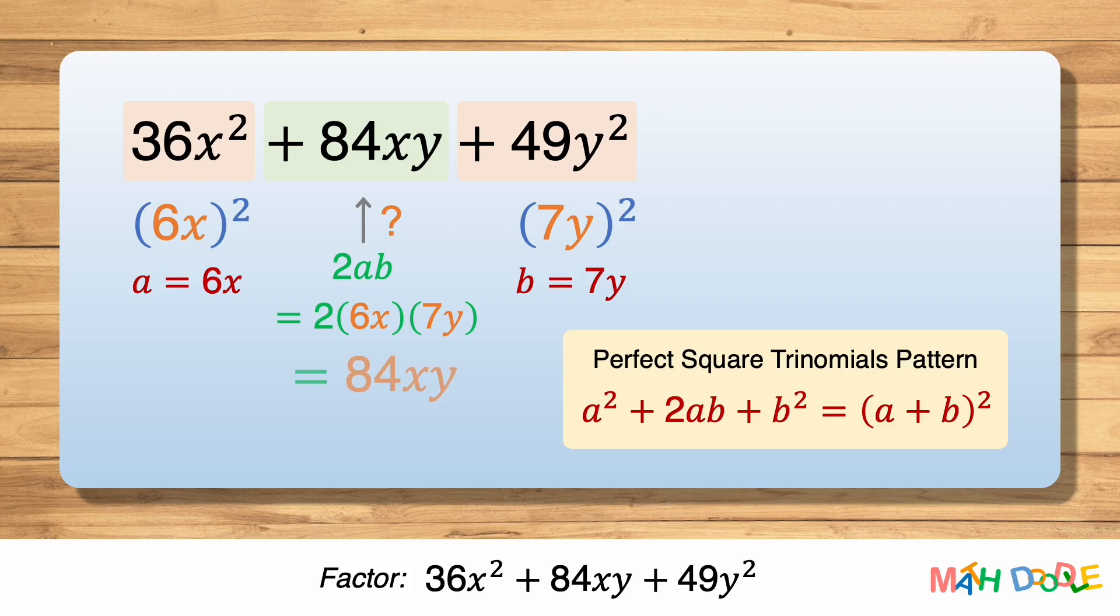84xy is equal to the middle term of the trinomial. This means that we can use the perfect square trinomial's pattern to factor this expression into the form of a plus b squared.